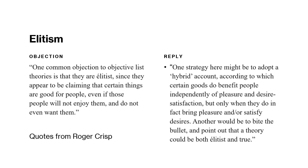Now I'll briefly mention some objections to objective list views. The main way people argue with list theorists is by arguing that a specific item on the list doesn't really belong there — but notice that doesn't invalidate the whole idea of an objective list view; it just argues about one item. So there are fewer objections that challenge the whole framework. One kind of objection that applies to all list theorists is an objection from elitism.